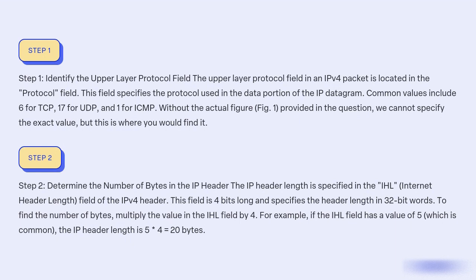Step 2: Determine the number of bytes in the IP header. The IP header length is specified in the IHL (Internet Header Length) field of the IPv4 header. This field is 4 bits long and specifies the header length in 32-bit words. To find the number of bytes, multiply the value in the IHL field by 4. For example, if the IHL field has a value of 5, which is common, the IP header length is 5 × 4 = 20 bytes.